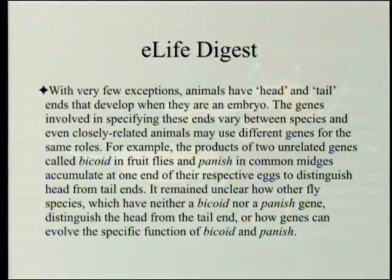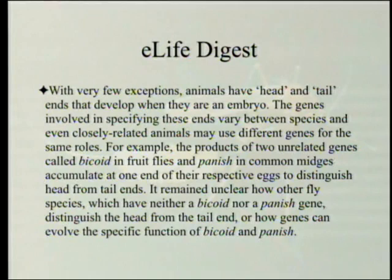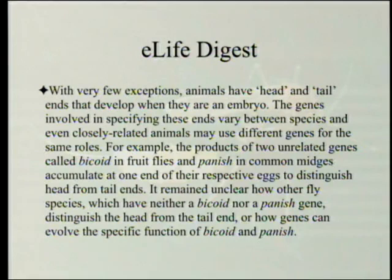eLife has put its own digest on this, which makes a good summary. With very few exceptions, animals have head and tail ends that develop when they are an embryo. The genes involved in specifying these ends vary between species, and even closely related animals may use different genes for the same roles.